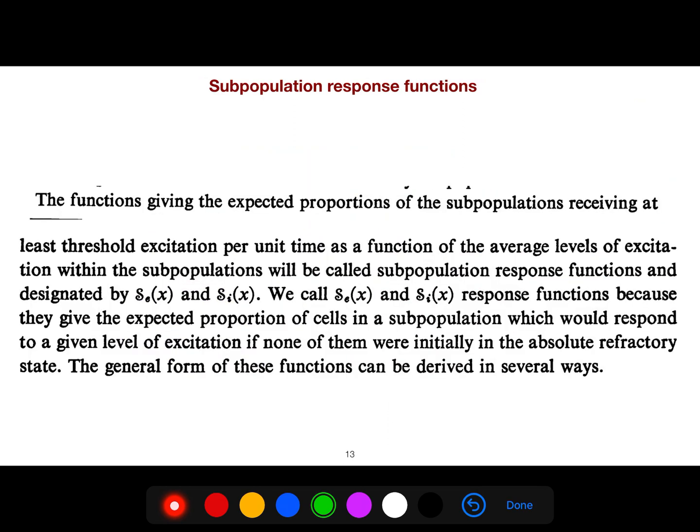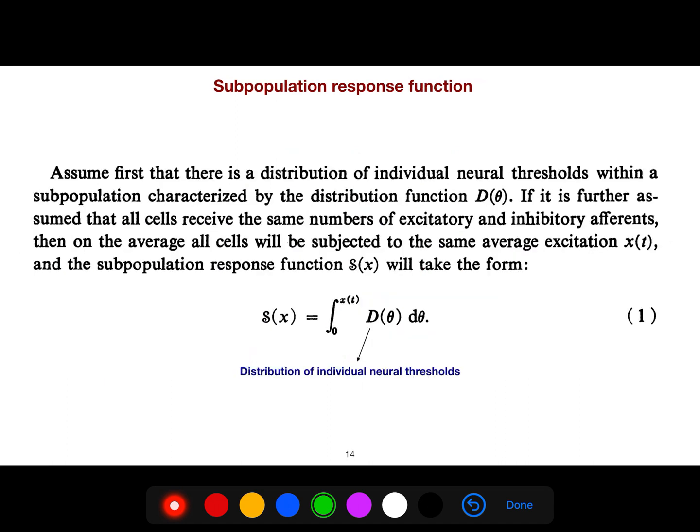The function giving the expected proportion of subpopulations receiving at least threshold excitatory per unit. This is the distribution of individual neural thresholds, and delta is your response function.